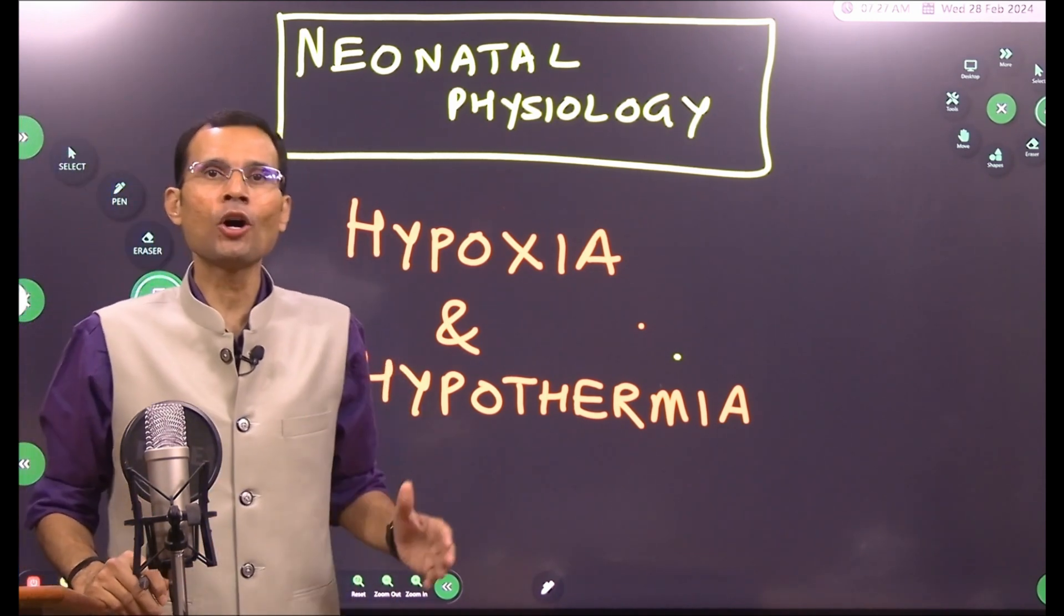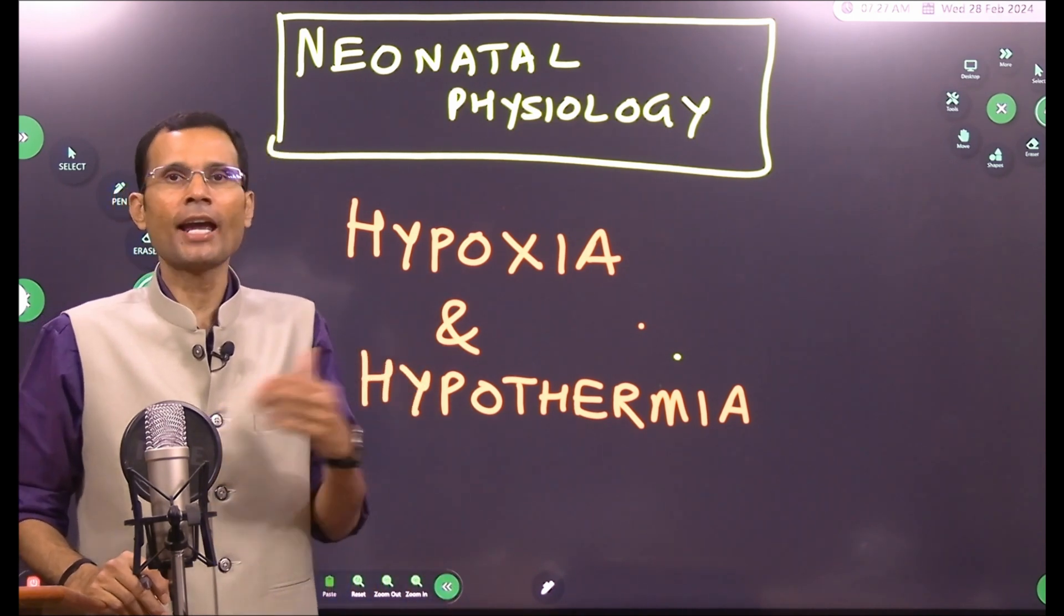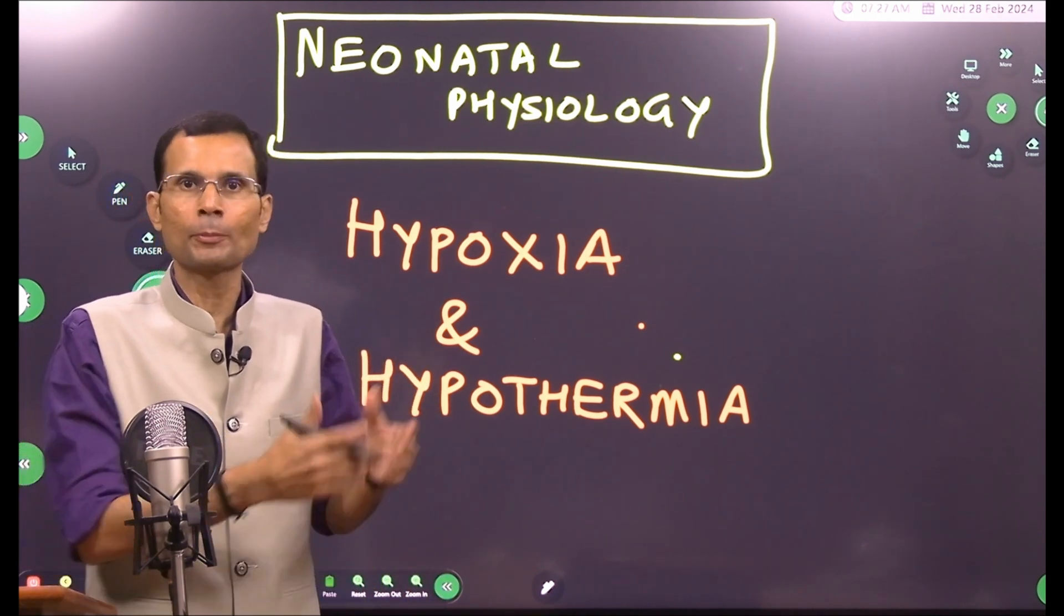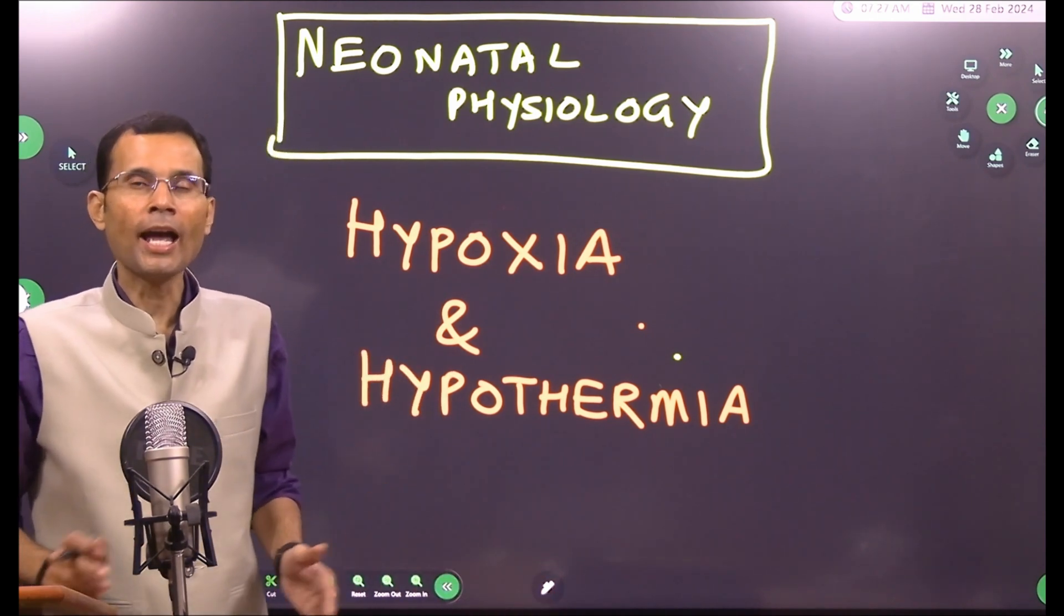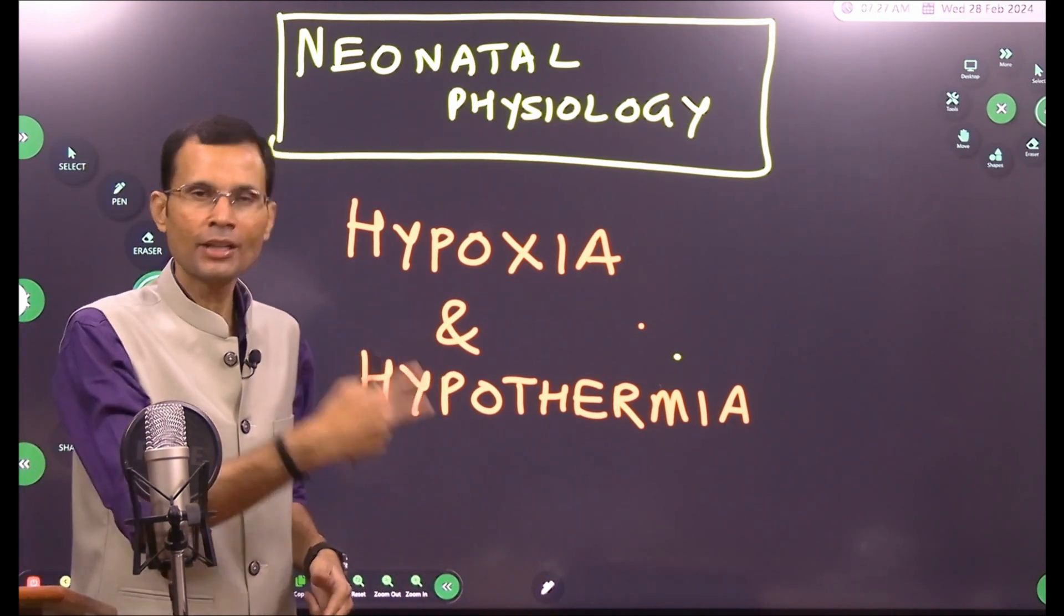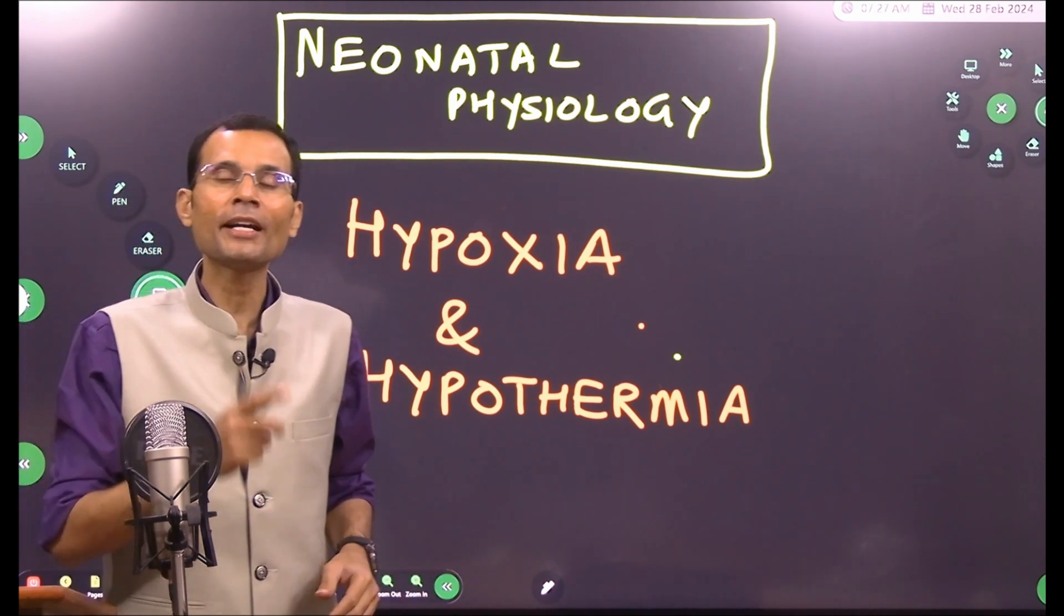Why is that? It's because inside the uterus, gas transfer was occurring across the placenta. The baby was dependent on the mother, and now as the cord has been clamped and cut, the baby has to breathe independently and acquire its own oxygen by itself.